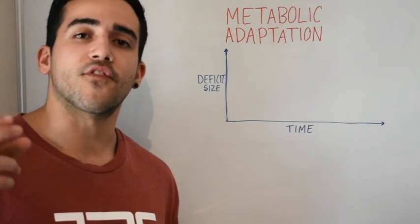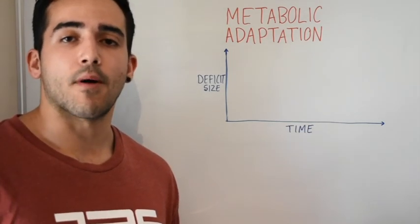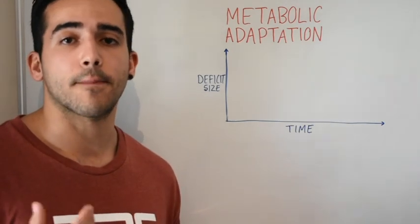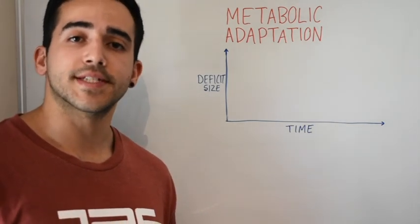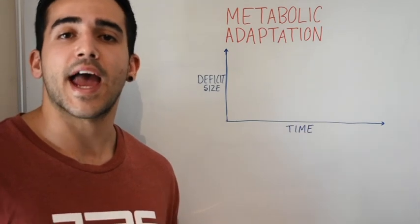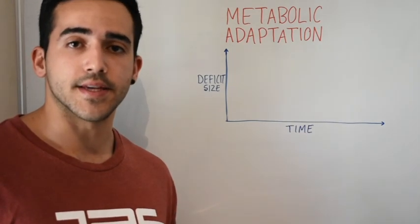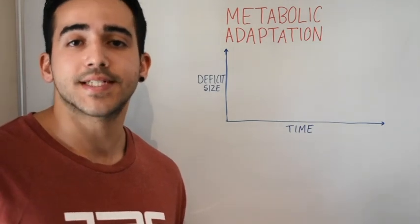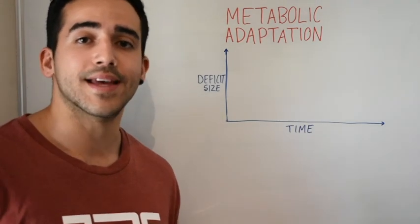And the set point is a more defined range and is impacted by our nutrition habits, lifestyle habits, and exercise habits over a long period of time. So for example, if you have been sitting at 80 kilos for 10 years, your body has obviously become accustomed to this weight and we could say that this is your body weight set point.